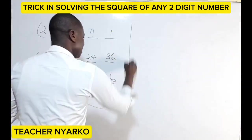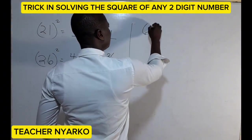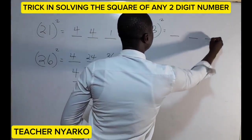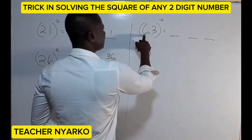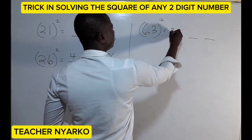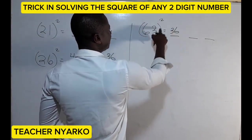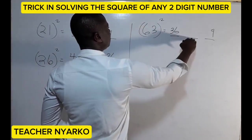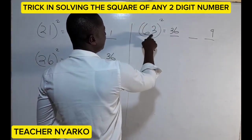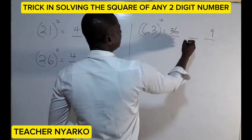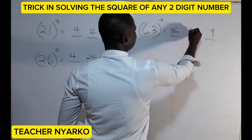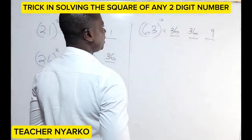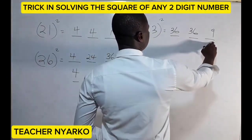Now let's consider 63 squared. Split into three parts: six squared gives us 36, so 36 goes here. Three squared gives us nine, so nine goes here. Then six times three is 18, and 18 times two is 36.